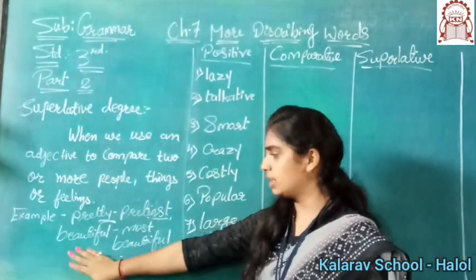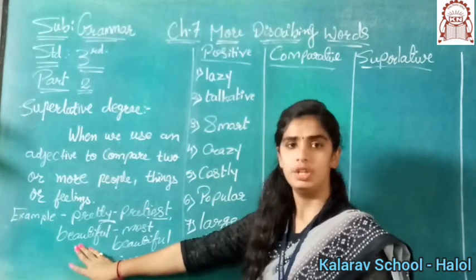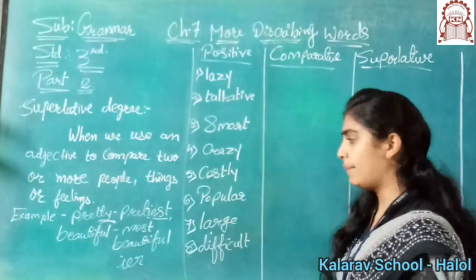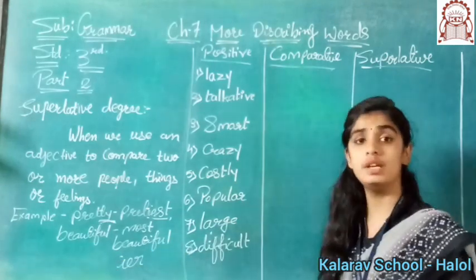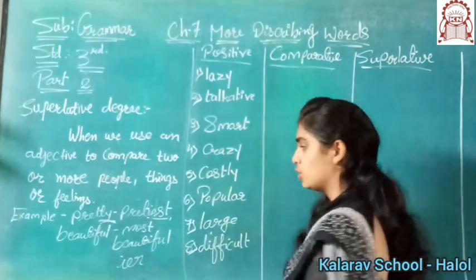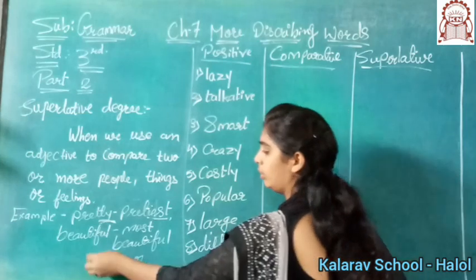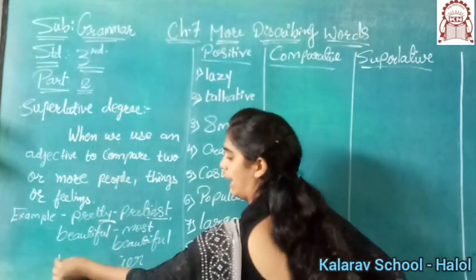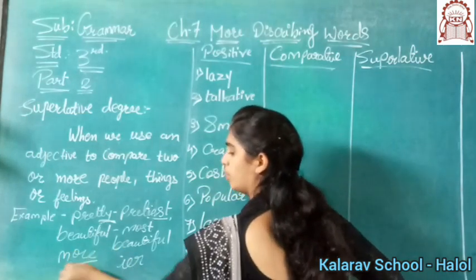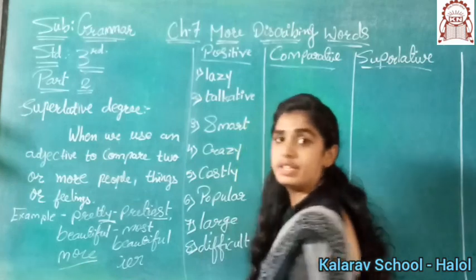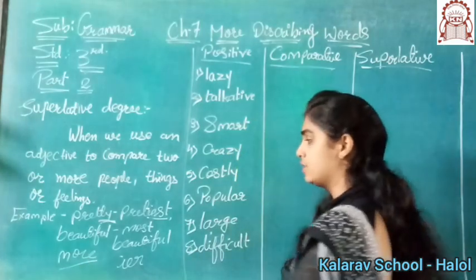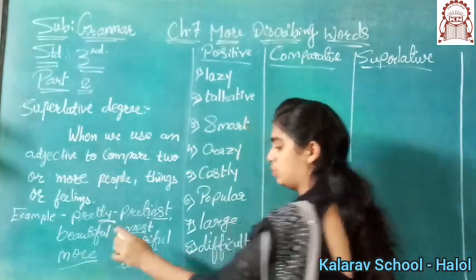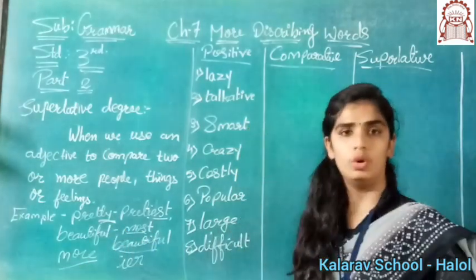Now see the next one: beautiful. So in comparative, we are using 'more.' So in comparative it will be 'more beautiful.' And in superlative, it will be 'most beautiful.'